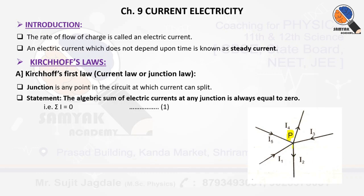Consider a junction with 4 currents — that is, I1, I2, I3, I4, and I5. The point at which current splits is the junction. So point P is considered as the junction.